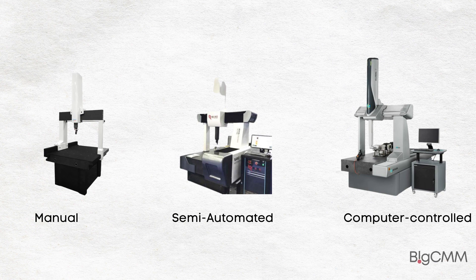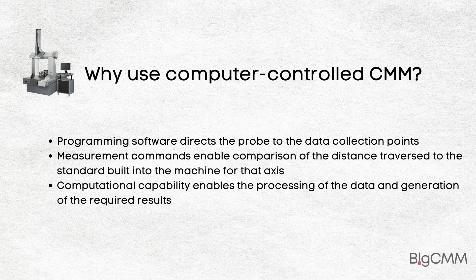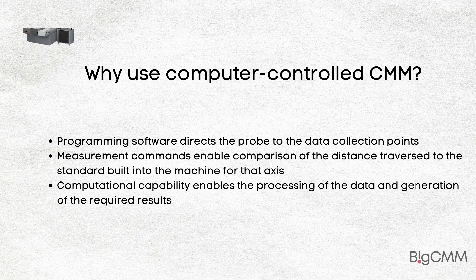Computer assistance is utilized for three major functions. Firstly, programming software directs the probe to the data collection points. Secondly, measurement commands enable comparison of the distance traversed to the standard built into the machine for that axis. Thirdly, computational capability enables the processing of the data and generation of the required results.